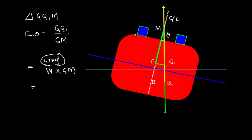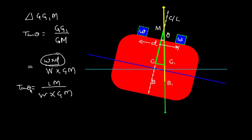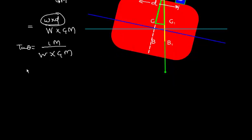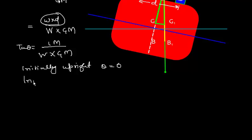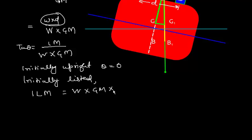So tan θ = list moment / (W × GM). If the ship was initially upright, then the initial theta is zero, and we can find the initial list moment. The initial list moment (ILM) is equal to W × GM × tan θ. This is a very important relationship.